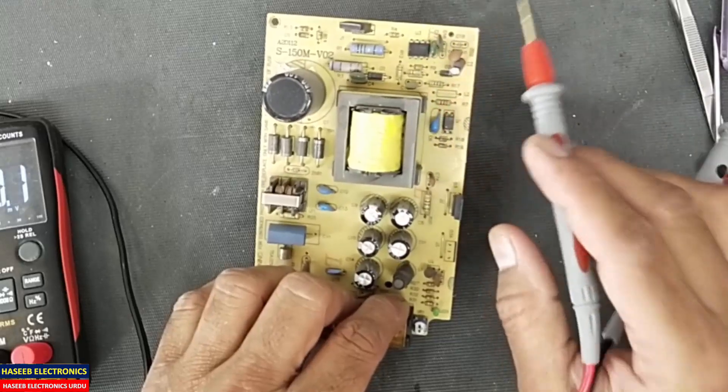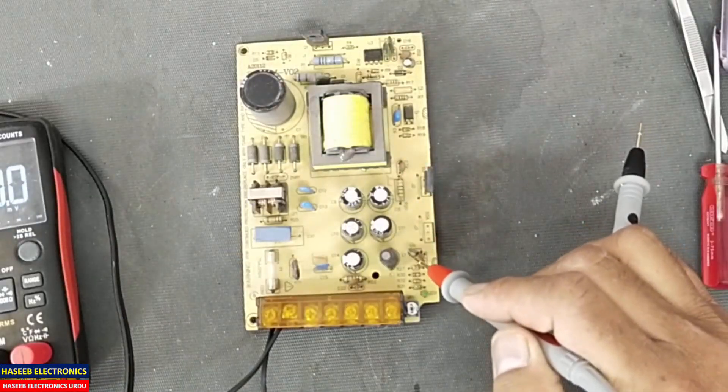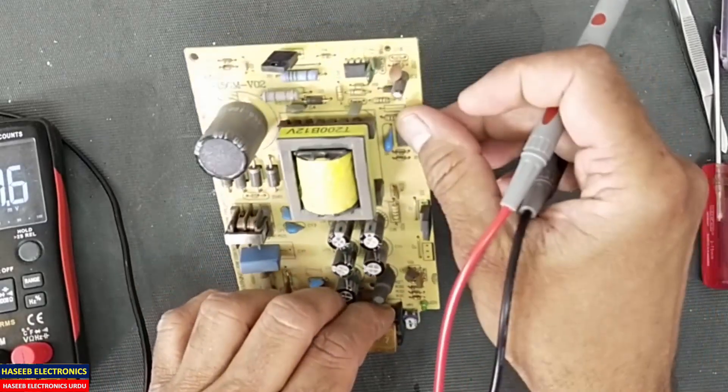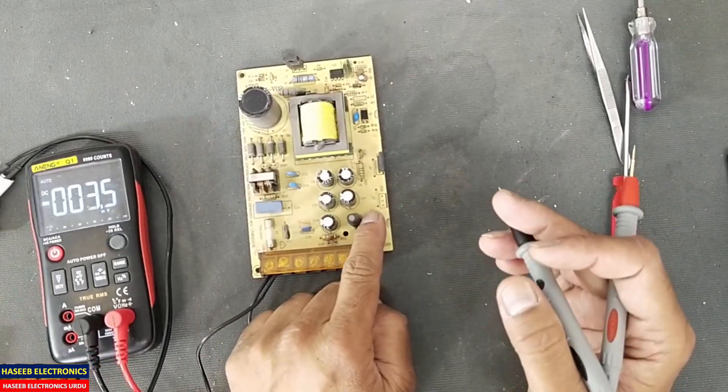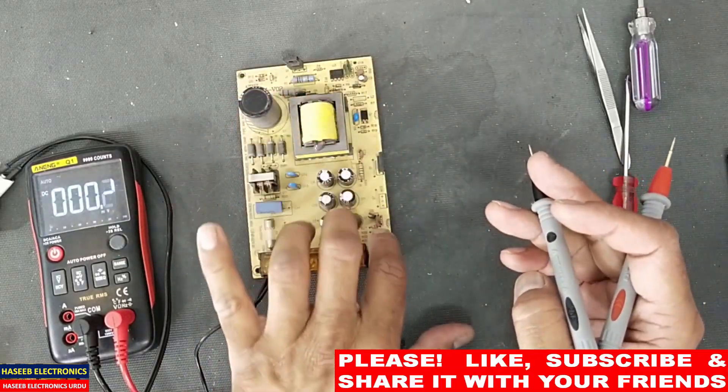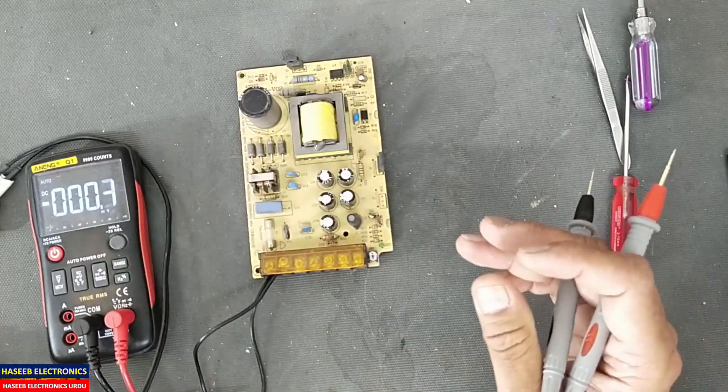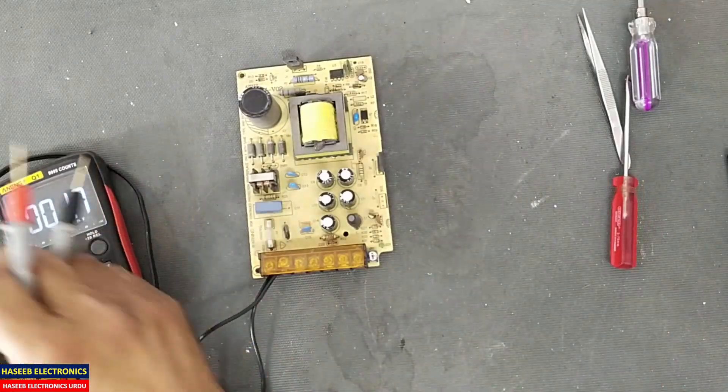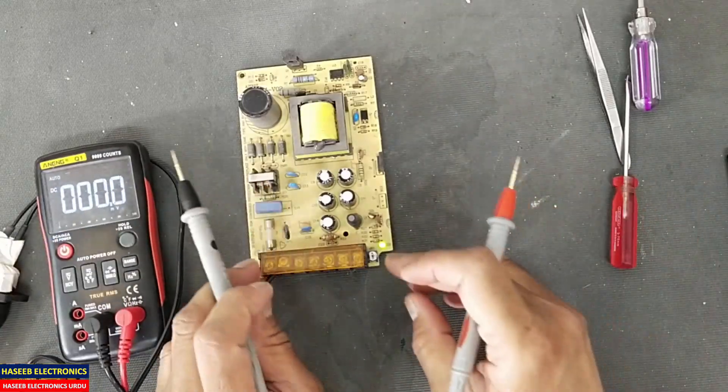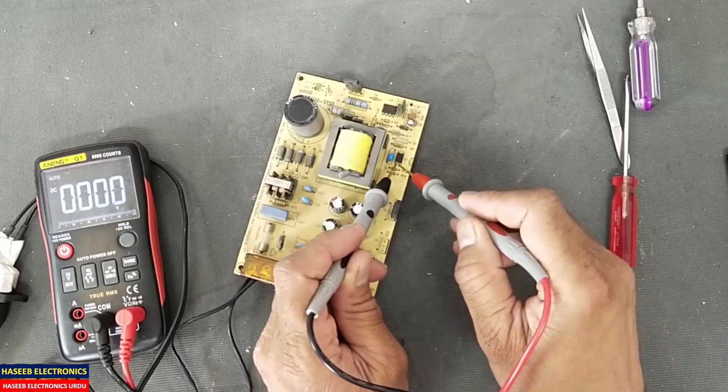If our feedback network - TL431 or PC817 or any optocoupler which is used here - if TL431 is bad it will fluctuate. PC817, this feedback circuit, either due to the output circuit, if anything is bad it will cause it to drive in reboot mode, that is fluctuation.